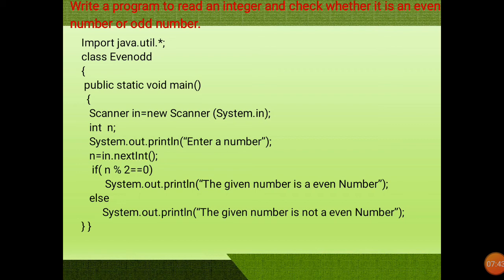Now a program based on if-else: write a program to read an integer and check whether it is an even number or an odd number. Again we input the number using the Scanner class — importing java.util, defining class 'EvenOdd', creating a Scanner object 'in = new Scanner(System.in)', printing 'enter a number', and storing it in n using in.nextInt(). Then we check: if n % 2 == 0 then the given number is even, else it is not an even number.